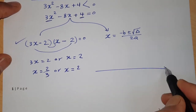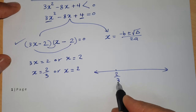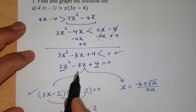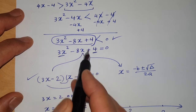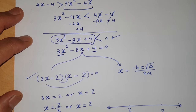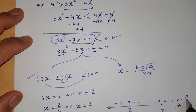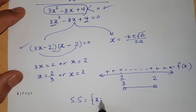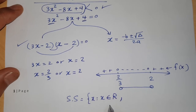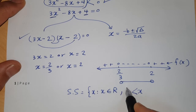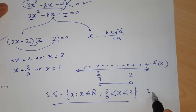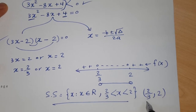Now draw a number line and plot the roots: 2/3 to the left and 2 to the right. Coming back to the original inequality, I want this trinomial smaller than zero. Between the roots the function is negative, and outside the roots it is positive, zero at the root points. So the solution set is all x such that 2/3 < x < 2, which can be written as the open interval (2/3, 2).